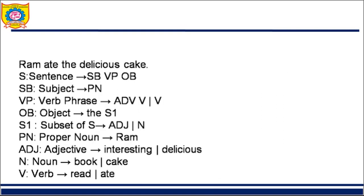Example: 'Ram ate the delicious cake.' When I describe a sentence, I divide it into two parts: subject and predicate. The subject is a noun phrase; the predicate holds verbs as well as adverbs. When I say 'Ram read the interesting book,' Ram is my subject and 'read the interesting book' is my predicate. There can be different sets of grammar rules depending on the text in the sentence.